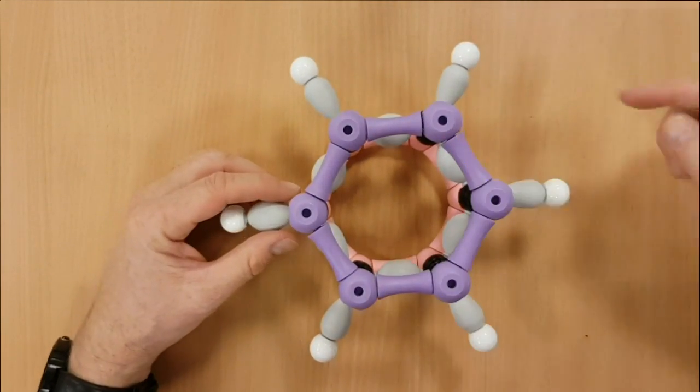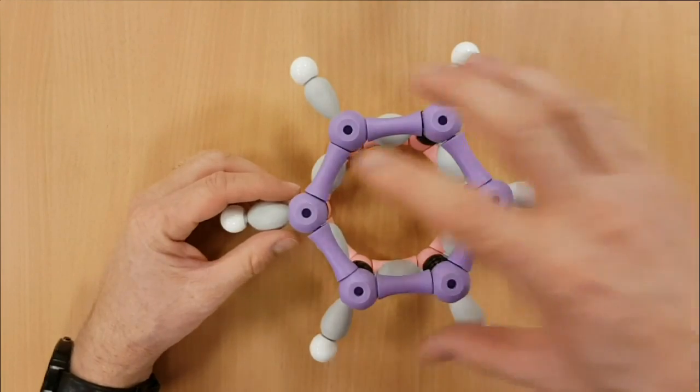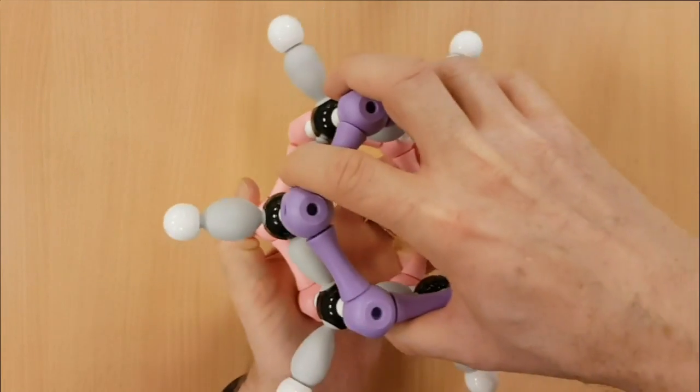If you're higher level, those are the pi electrons. But for SL you need to know this ring at the top, ring at the bottom.